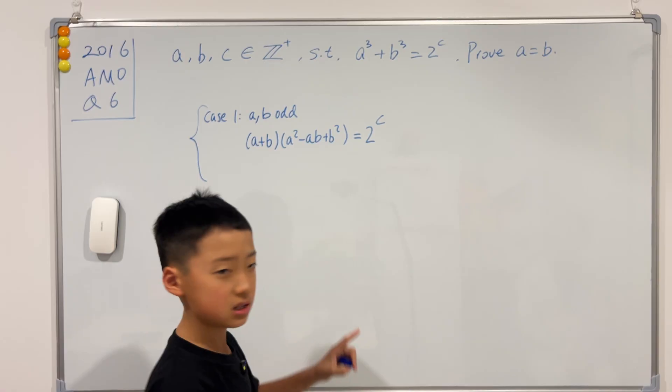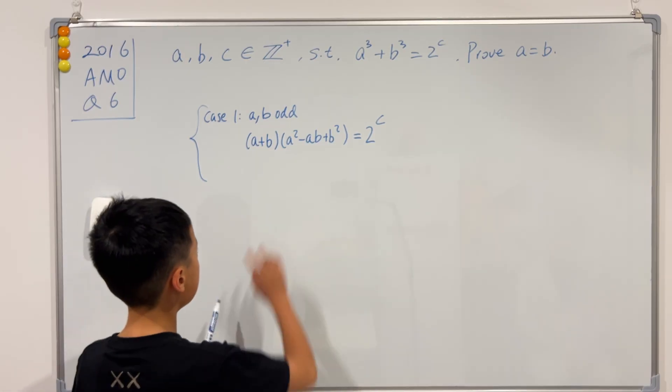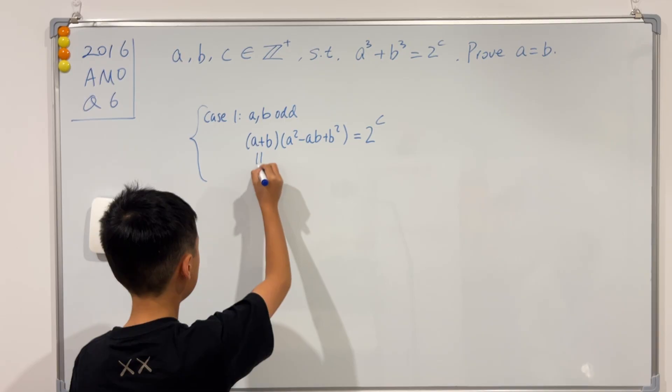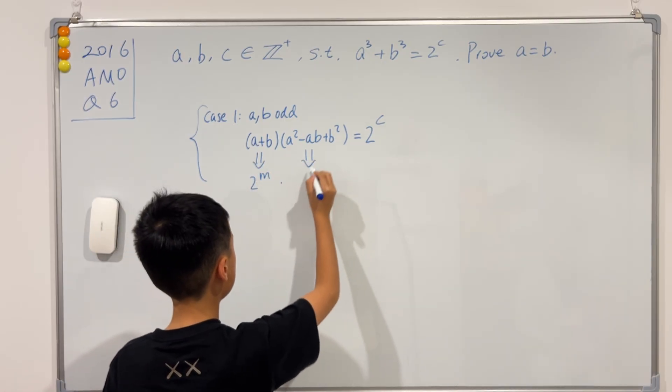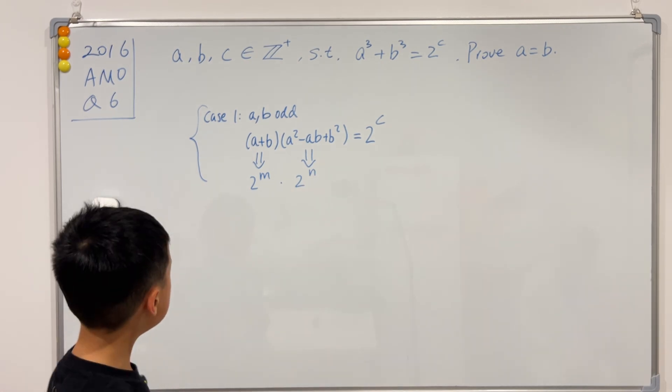Now, if the right hand side is a power of 2, then we know that the left hand side, both of these, needs to be a power of 2 as well, like 2 to the m and 2 to the n. Now, let's see.